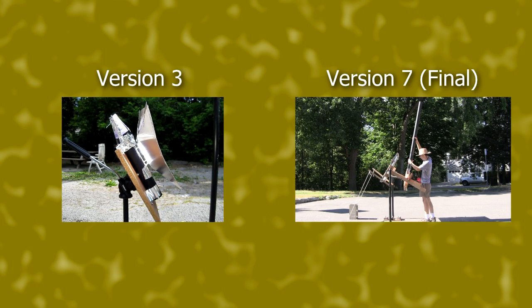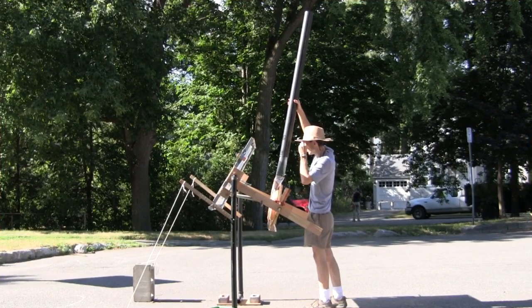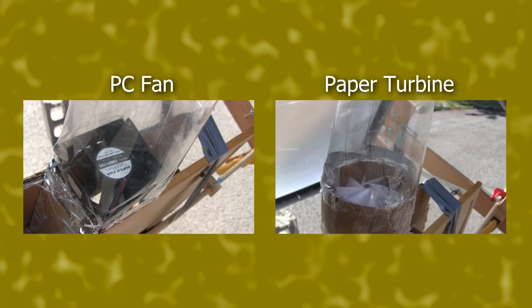But it's hard for my Fresnel lens to heat up a really huge cross sectional area of air, so I went with a long tube and higher temperatures. The end result was that I couldn't turn a PC fan, but at least I could turn a paper turbine.